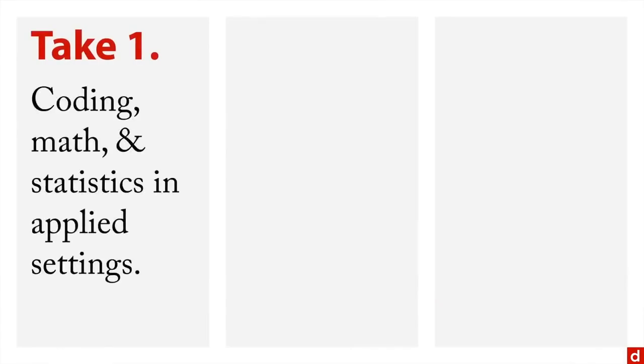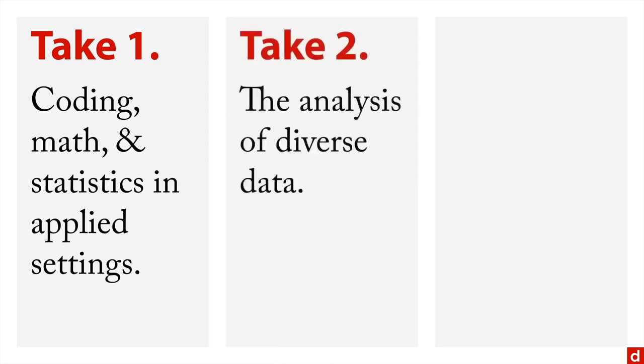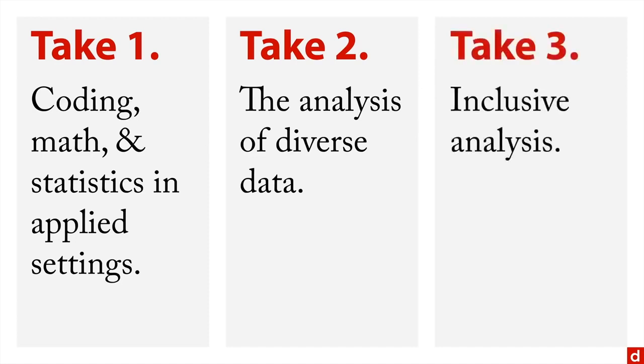Data science can be defined in a few ways. Take one: data science is coding, math and statistics in applied settings. Take two: data science is the analysis of diverse data, or data you didn't think would fit into standard analytic approaches. A third way is that data science is inclusive analysis—it includes all of the data and information you have to get the most insightful answer to your research questions.